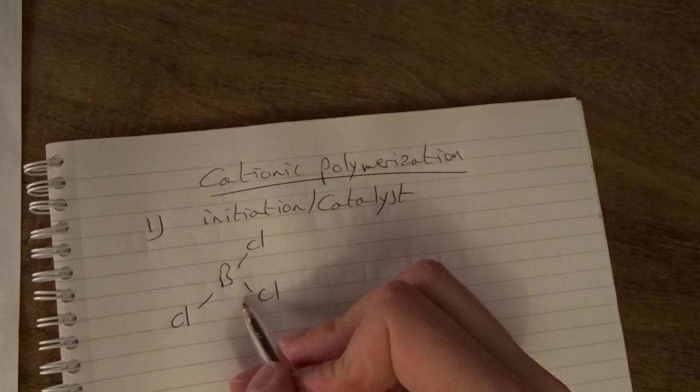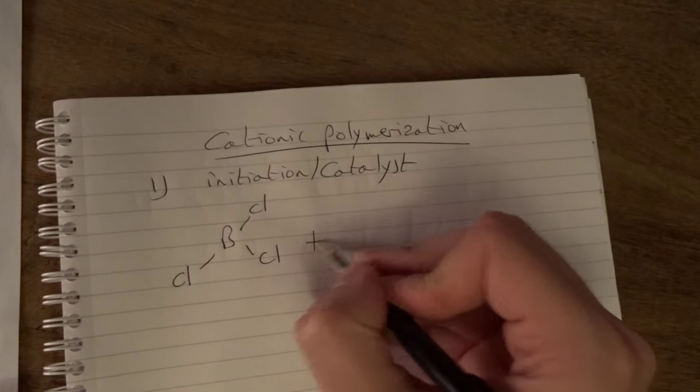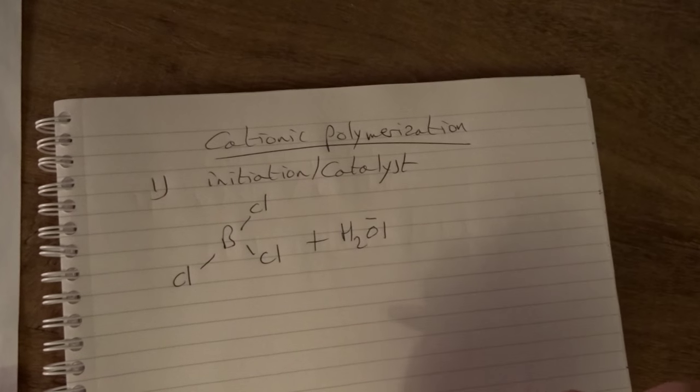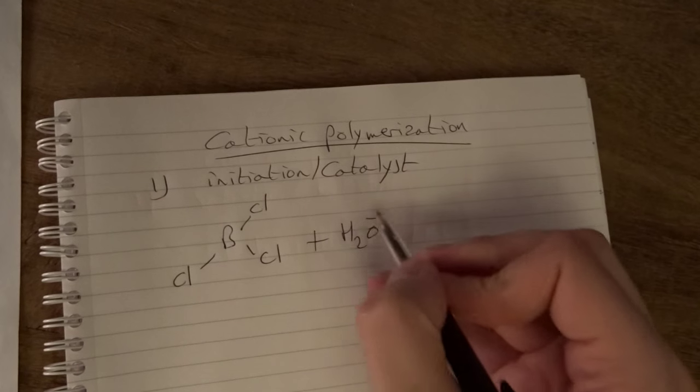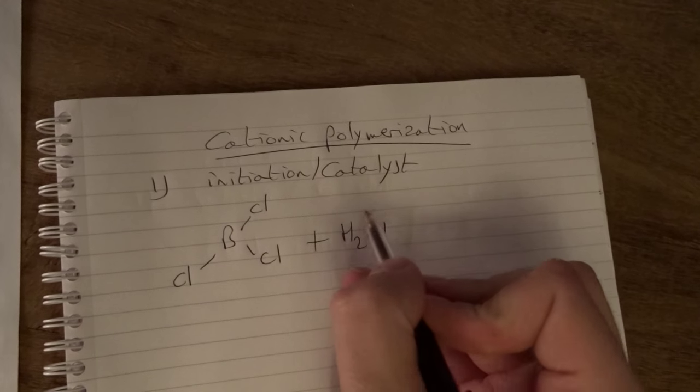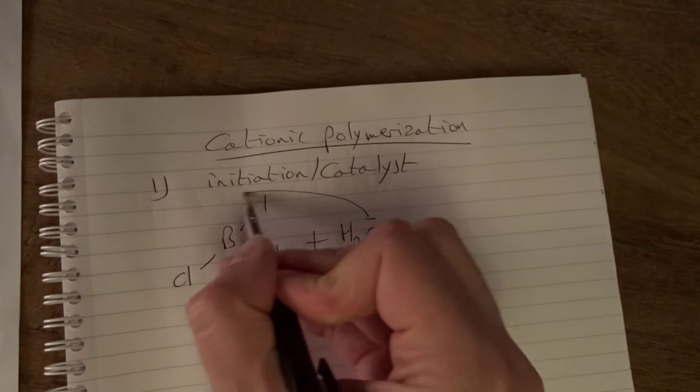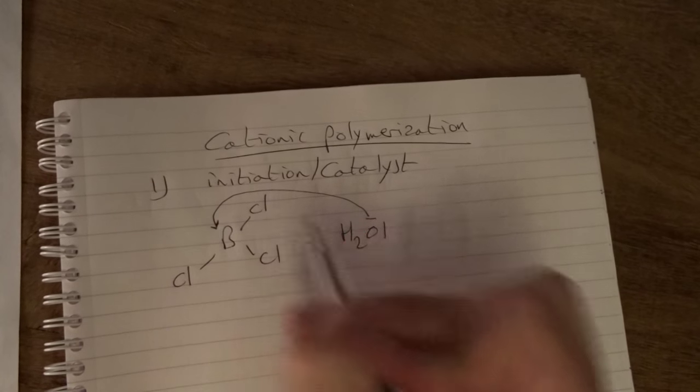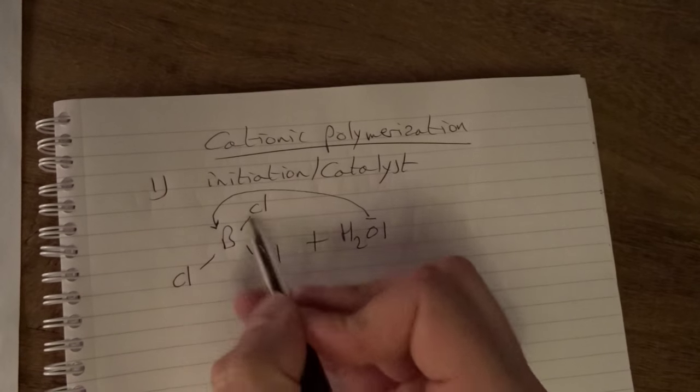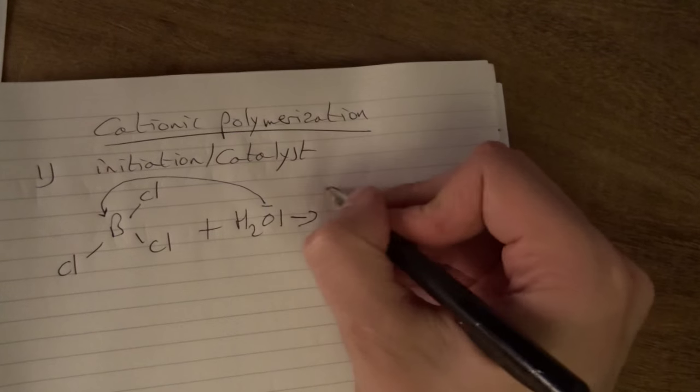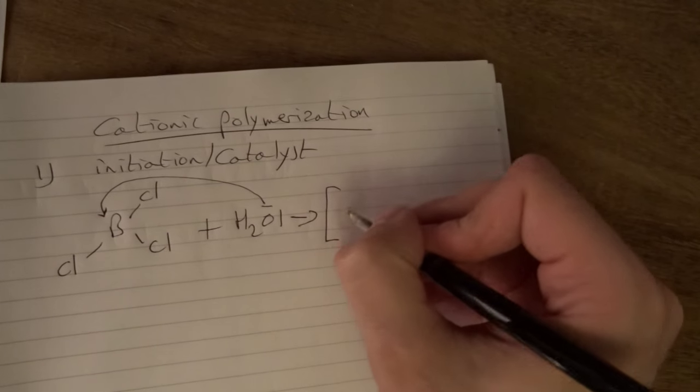For example, boron trichloride is a Lewis acid and when it reacts with H2O, which has an excess of electrons, so a Lewis base, a co-initiator, those electrons can be donated to the boron trichloride and this can accept that as an electron acceptor, Lewis acid, which will yield the initiator.